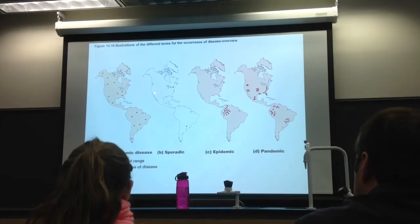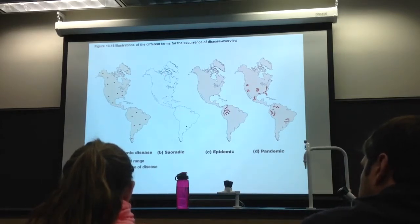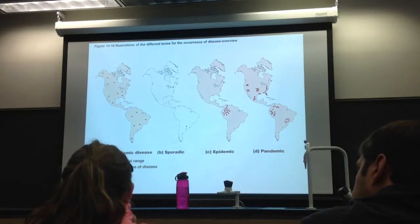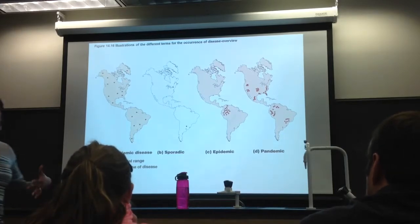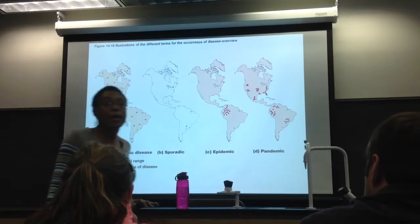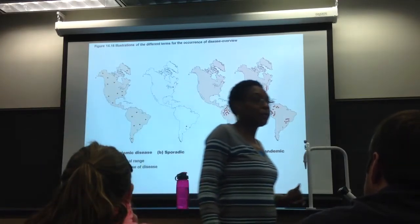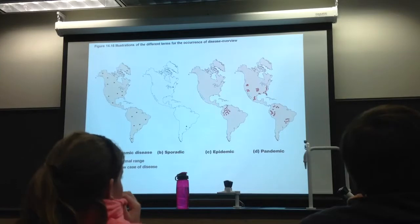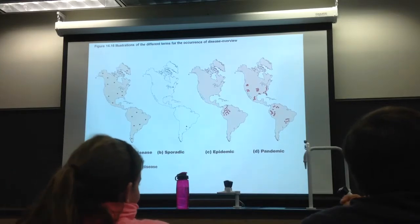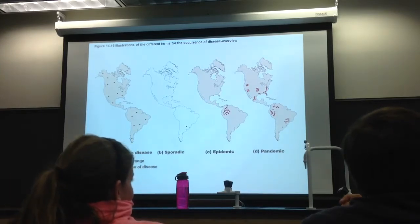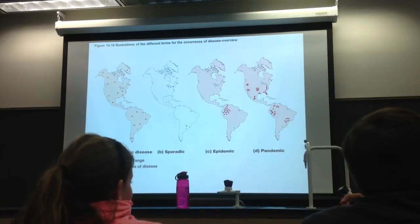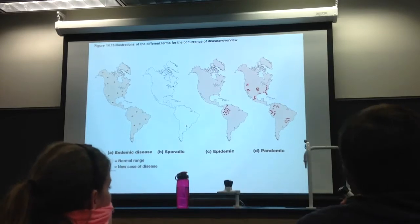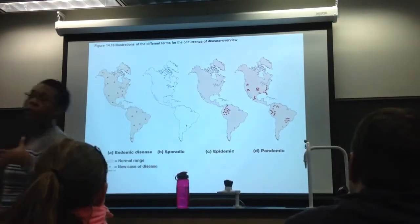Sporadic means it's not endemic. Most people don't have the disease; you just have a few isolated cases. Hantavirus tends to be sporadic — there are a few cases here and there out west, but it is not endemic.